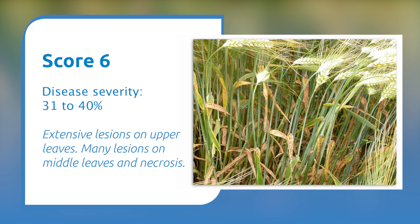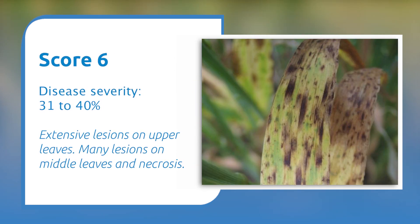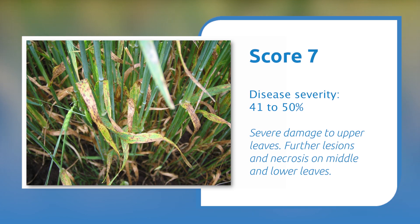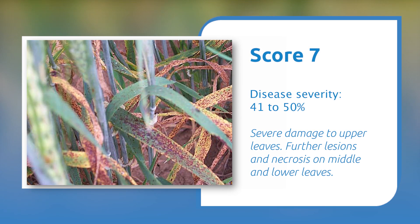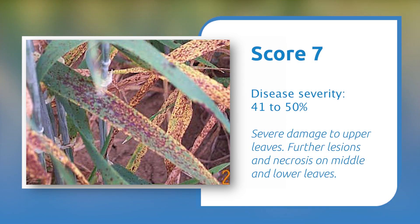Number six on the scale shows extensive lesions on the upper leaves, lesions in the middle leaves, and a lot of necrosis — approximately 31 to 40 percent. Number seven sees severe damage to the upper leaves, lesions on the middle and possibly down to the lower leaves in the canopy, equating to 41 to 50 percent leaf infection.